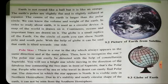On the globe, you can show the North Pole and the South Pole. If you have a globe at your home, you can see in the picture of the earth there is a North Pole and a South Pole. With the help of the globe, it can be said that the earth is tilted towards one side.